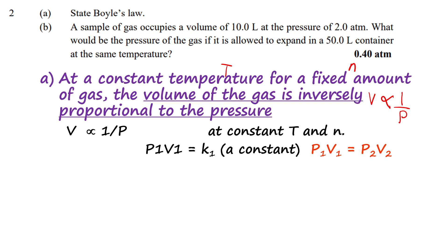A sample of gas occupies a volume of 10 liters at a pressure of 2.0 atm. What would be the pressure of the gas if it is allowed to expand into a 50 liter container at the same temperature? So we have V₁ = 10 L, P₁ = 2.0 atm, and V₂ = 50 L. We need to find P₂ using P₁V₁ = P₂V₂.